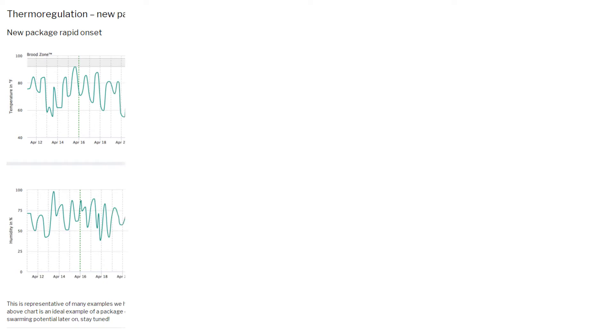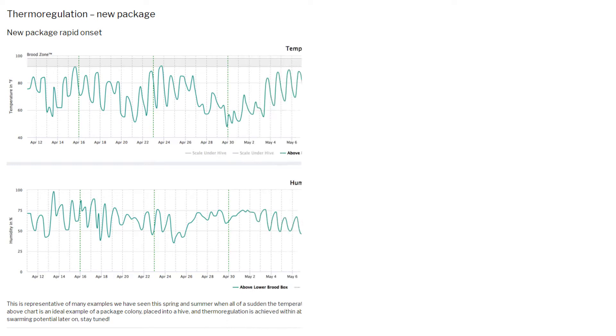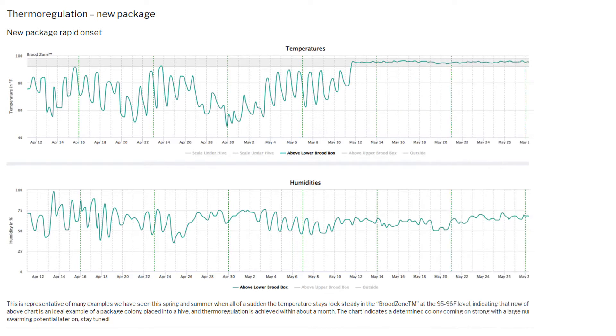Look at this graph. A new colony of bees was introduced into the hive in mid-April. The temperature and humidity varies throughout the day. Now look at what happens to the reading starting on May 12th, a stunning change.